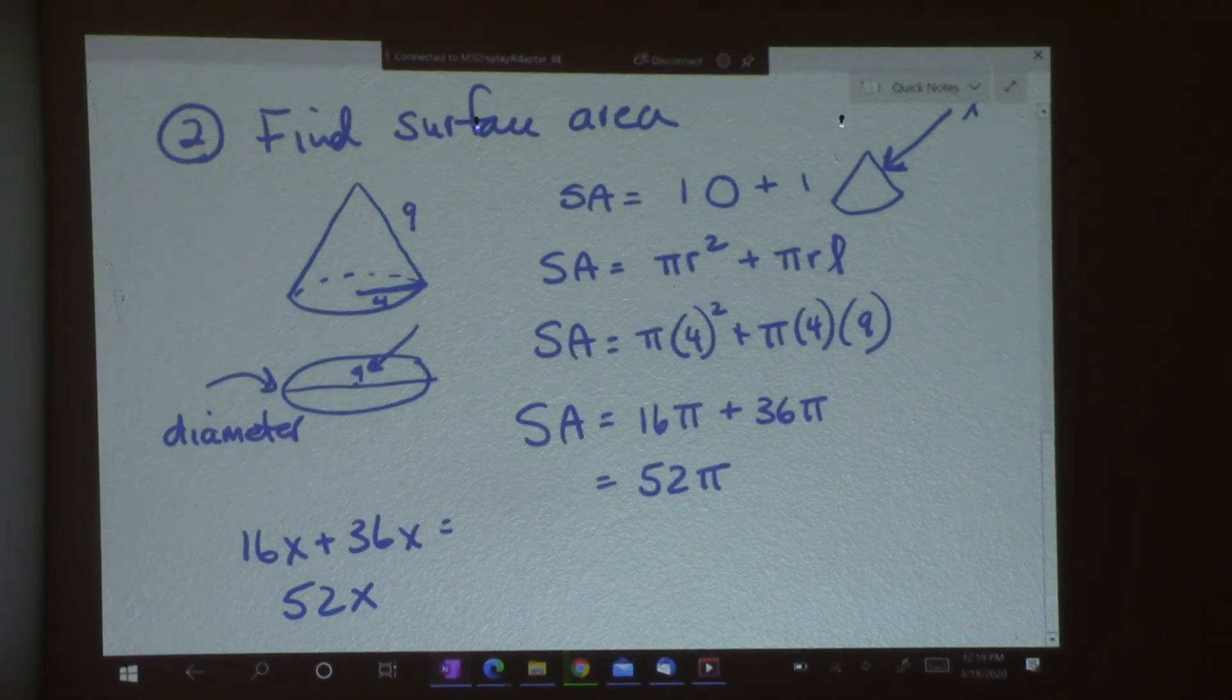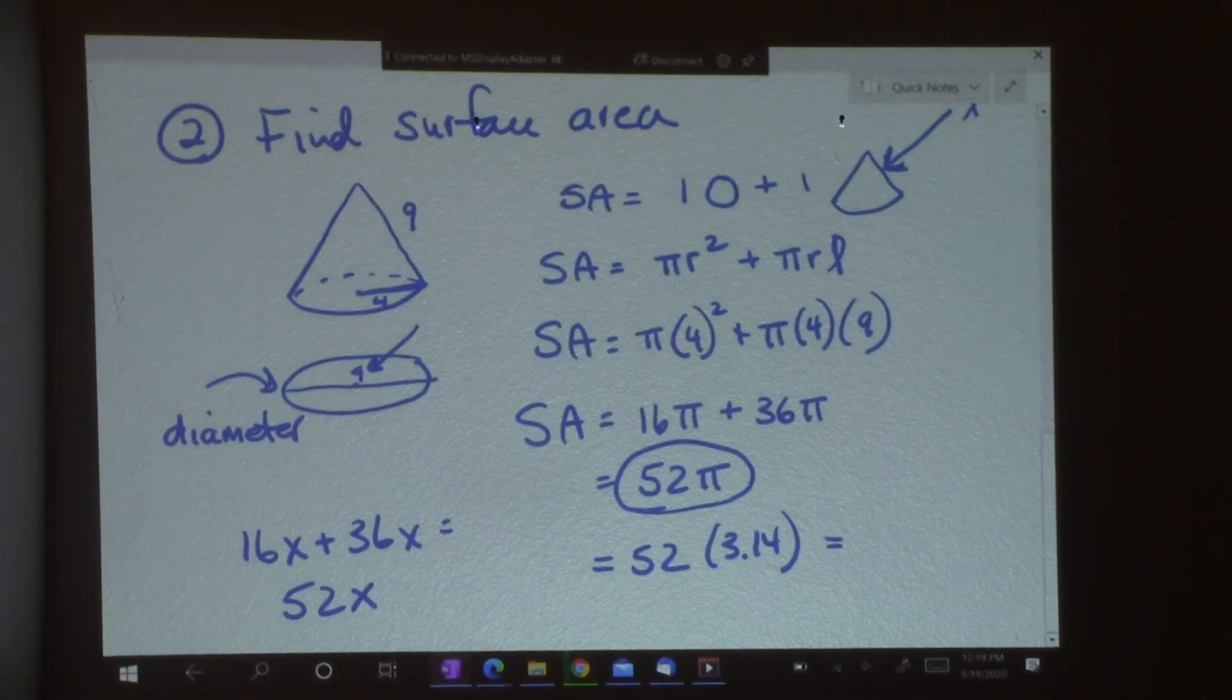And if you had this answer on your test, I would accept that. However, in the back of the book, sometimes they don't have the answer in terms of pi. They have it in terms of the decimal. So I'm going to go ahead and write that answer too. Working it up right now. Hey Johnny, why don't you come say hi to everybody? They can hear you upstairs. Hey guys. And that works out to be 163.28. And we'll call this centimeters. So it's centimeters squared. And that's our answer.